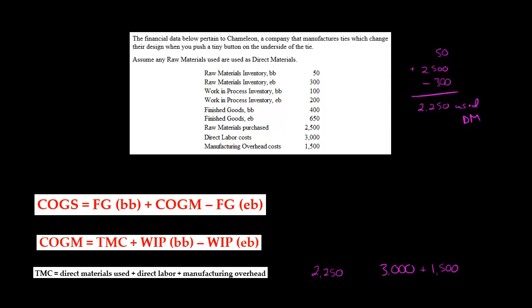You just start with the beginning balance of raw materials, add the purchases — that's the total amount of raw materials available at any point during the period — then subtract what's left over at the end. The amount remaining is what you used. So we take those amounts: $2,250 plus $3,000 plus $1,500 gives us $6,750 as our total manufacturing cost.